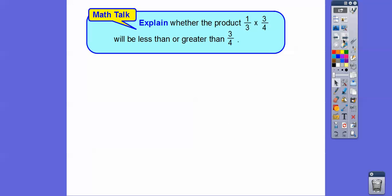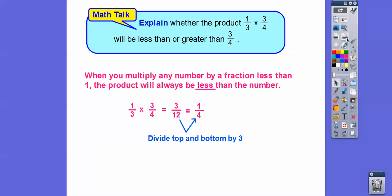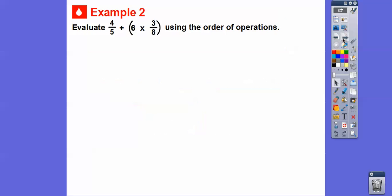Explain whether the product of one-third times three-fourths will be less than or greater than three-fourths. Whenever you multiply a number times something that's less than one, it's always going to be smaller than the number. So when we multiply any number by a fraction less than one, the product will always be less than the number. One-third times three-fourths: one times three is three, three times four is twelve — that's three-twelfths. Divide by three: one-fourth. One-fourth is definitely less than three-fourths.